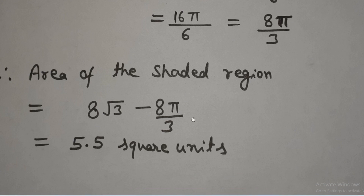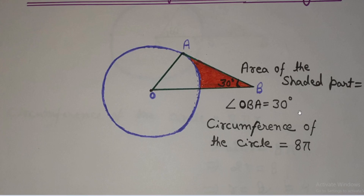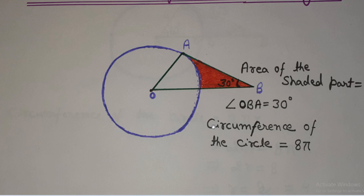Substituting the values of π and √3, the area of the shaded region comes out to be approximately 5.5 square units. In this way we have calculated the area of the shaded region by subtracting the area of the sector of the circle from the area of the triangle. Hope you enjoyed this video. If you found it interesting and informative, please like and share, and subscribe to my YouTube channel Engineering Made Easy so you get notifications of my latest videos. Thank you for watching — see you soon, bye bye and take care.